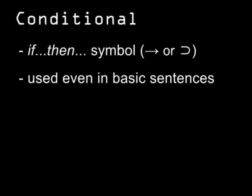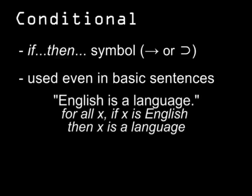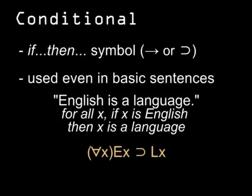Consider sentences where you say that if one thing is true, then something else follows. This if-then construction is very important in logic — we'll use it to structure even very basic statements where it's hidden in ordinary language. Take the statement 'English is a language.' The logic for this simple sentence is actually: for all x, if x is English, then x is a language. Where the horseshoe symbol represents the if-then conditional.